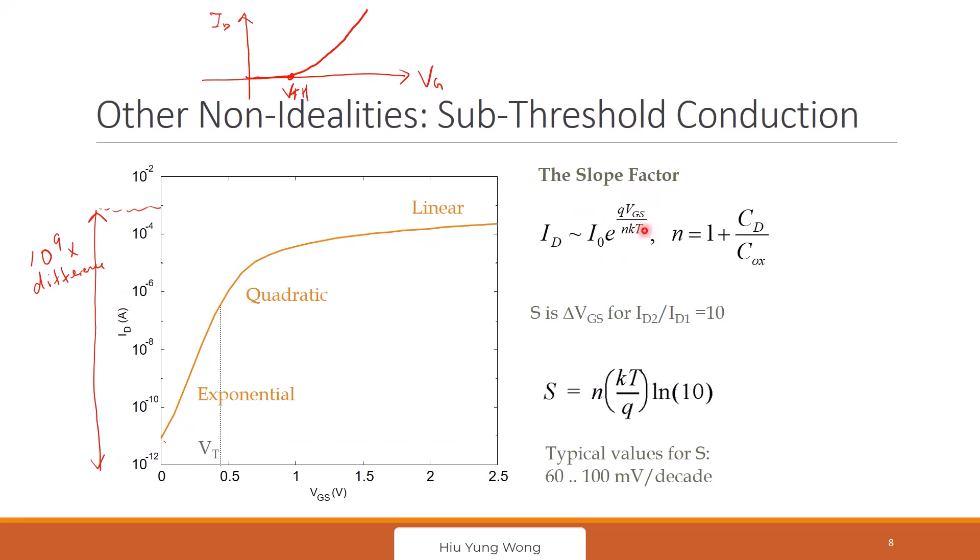How does it go? You go up with exponentially. You see that it has qVG divided by NkT. It still depends on the temperature also. And it has an N. N is go to 1 plus CD over Cox. So we are not talking about device physics. I don't want to explain or derive this. But basically, this is what you mean. I have a capacitor here. This is the gate. This capacitor is Cox. And then I also have a depletion capacitance, this is CD.